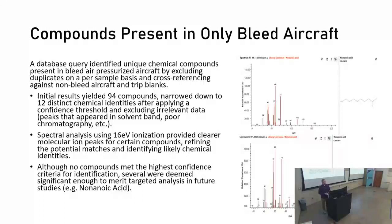As far as compounds present only in bleed-air aircraft, we found a number of them, though they're difficult to sift through and not completely identified — this is certainly a screening step and we'll need to go back with standards. The 16 eV data is allowing us to discard a large number of false identifications and reach potentially better ones. For example, octanol was something we thought we were seeing in many samples, but mass 130 — the molecular ion for octanol — was not showing up at all. Mass 158 was, suggesting maybe decanol or nonanoic acid instead. Either way, we now know where not to look when we start targeted screening.